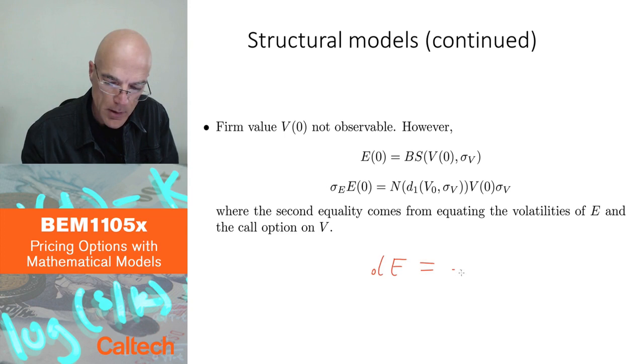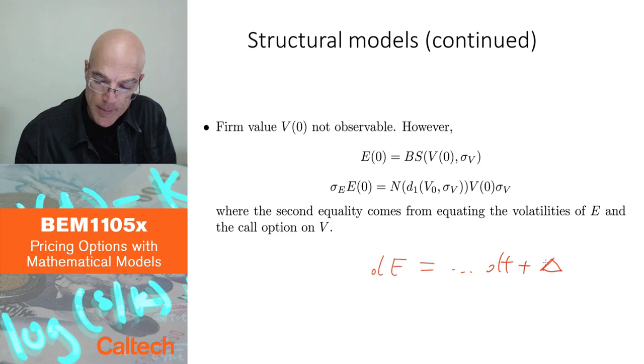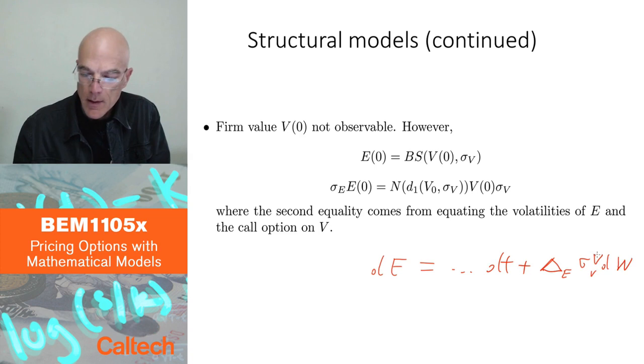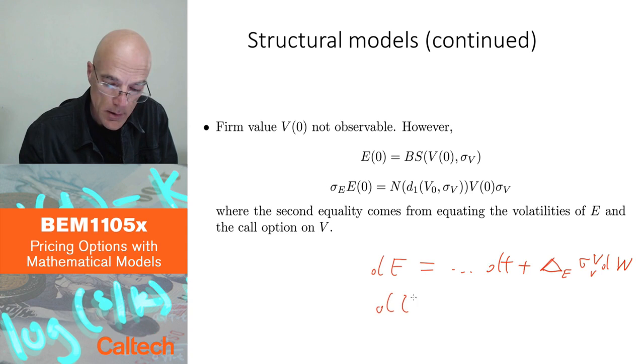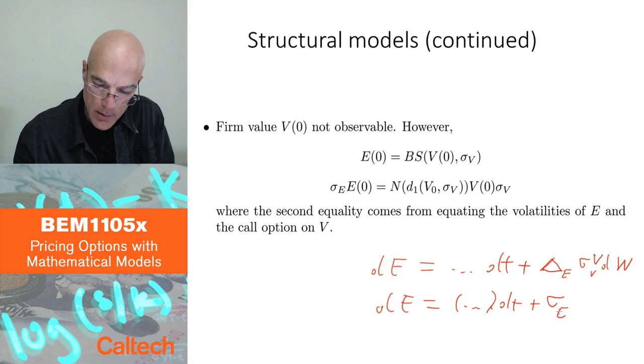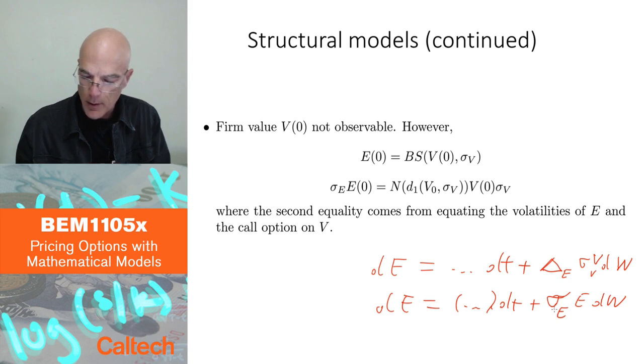On the other hand, we also know delta, how to hedge, how to replicate in the Black-Scholes-Merton model. Namely, if you want, by Ito's rule, we know that dE is something dt plus the first derivative, let's call it delta, maybe delta E, times sigma VdW. That would be just from Ito's rule, the first derivative, and then times whatever was the dW term, which is sigma V times V from the previous slide. On the other hand, dE is just going to be something dt plus sigma E, the volatility of the equity of the stock, times EdW. This is just the Black-Scholes model saying that, well, not necessarily Black-Scholes because sigma may not be constant, but Black-Scholes type model where, instead of S, I would write E.